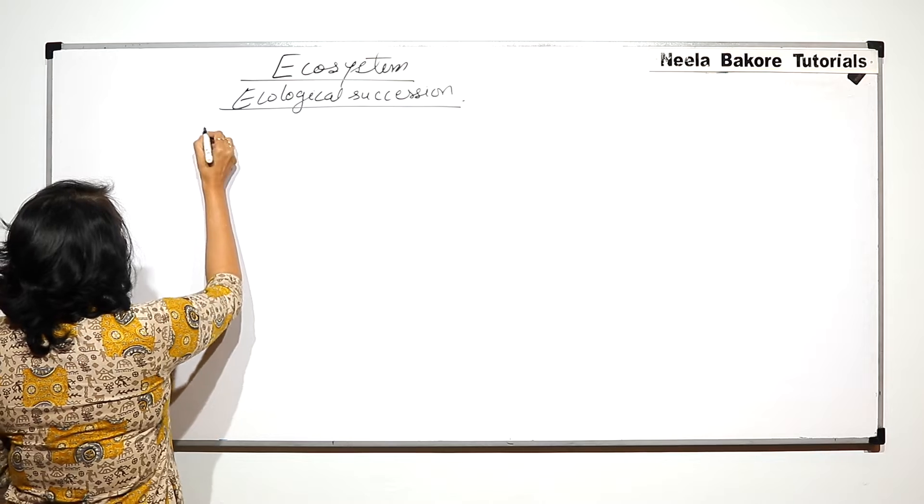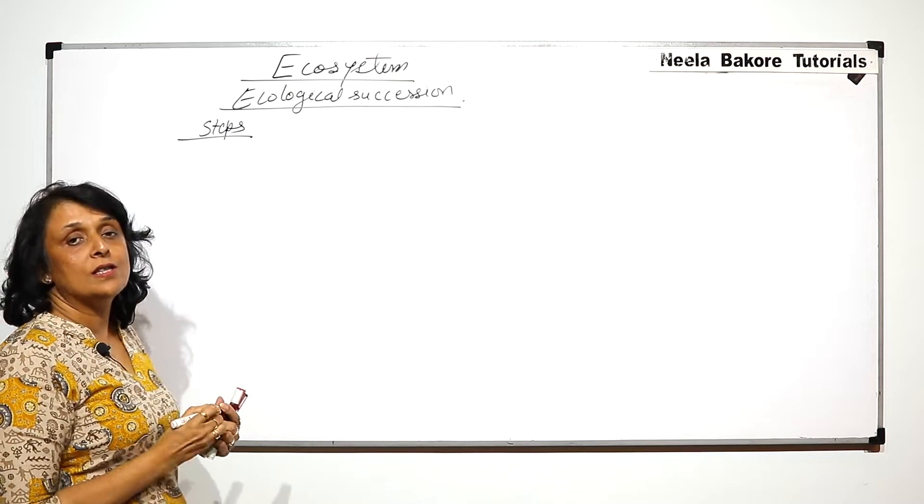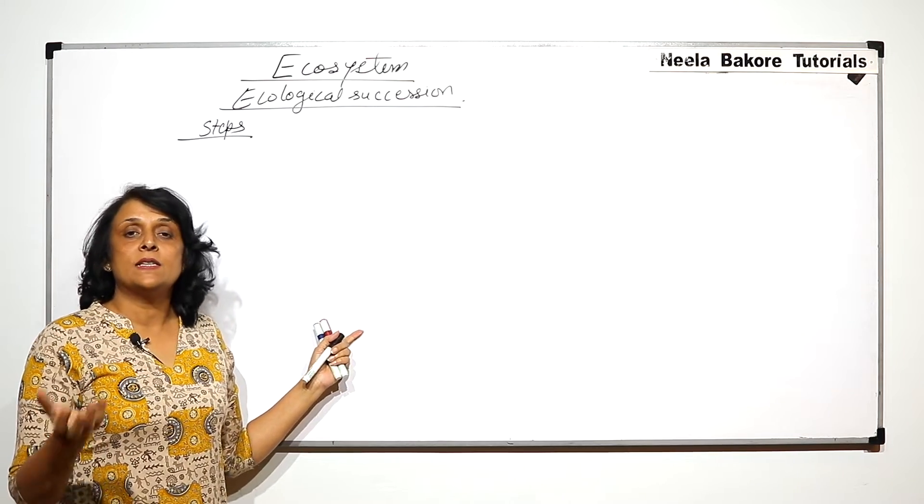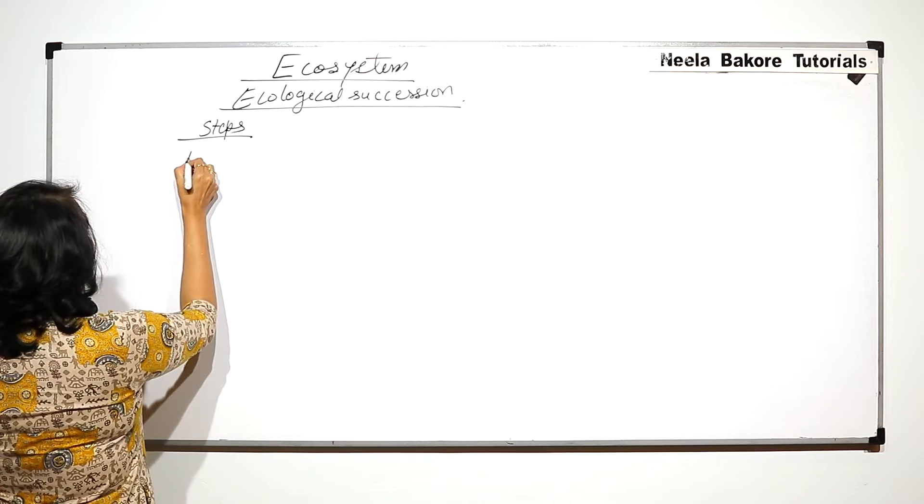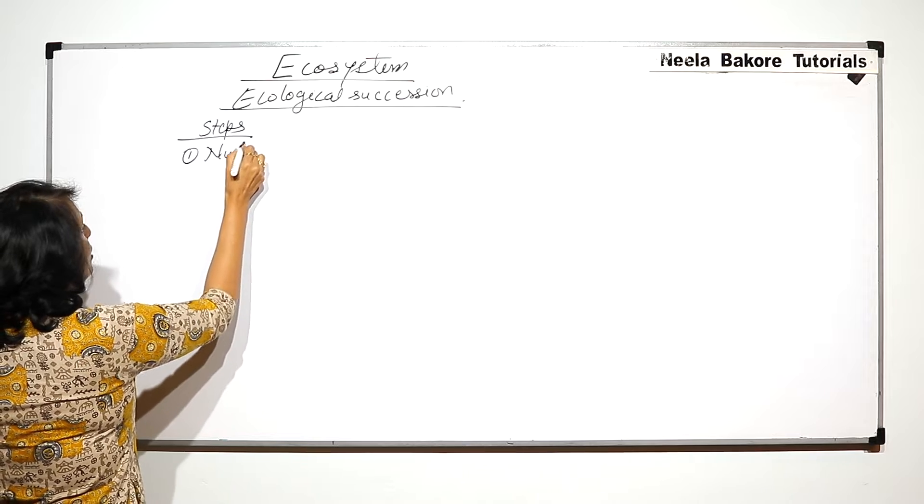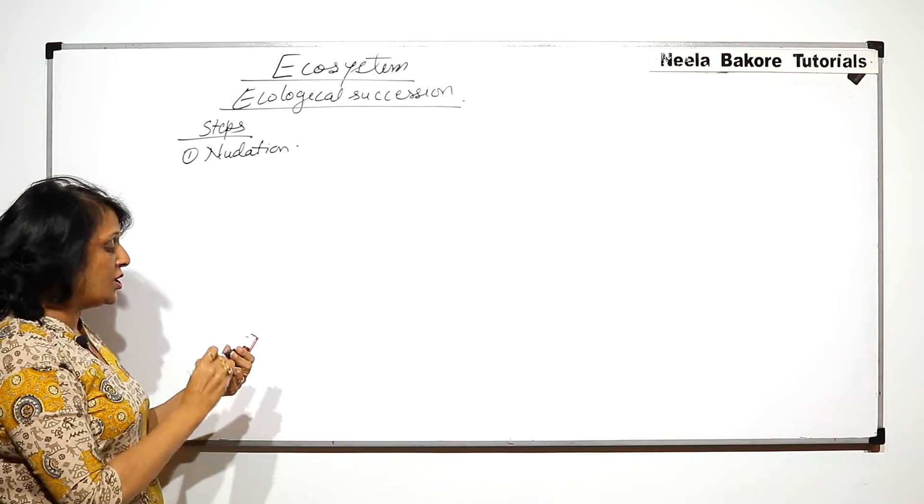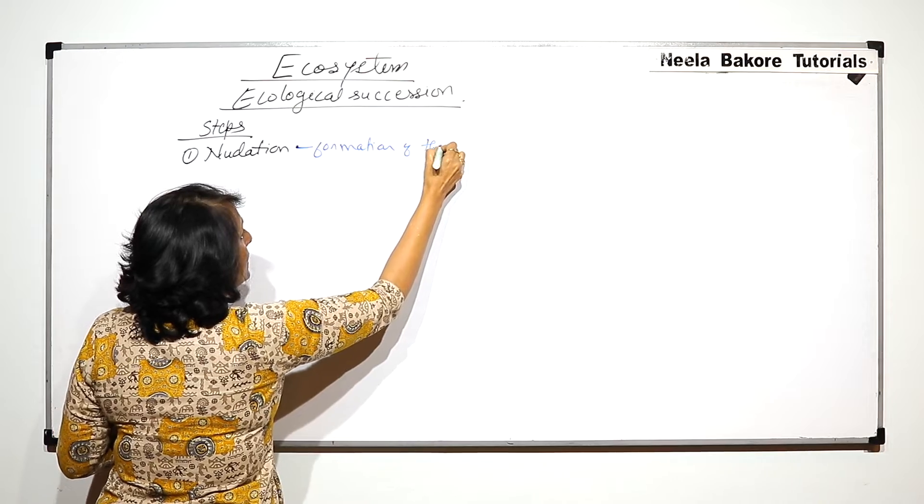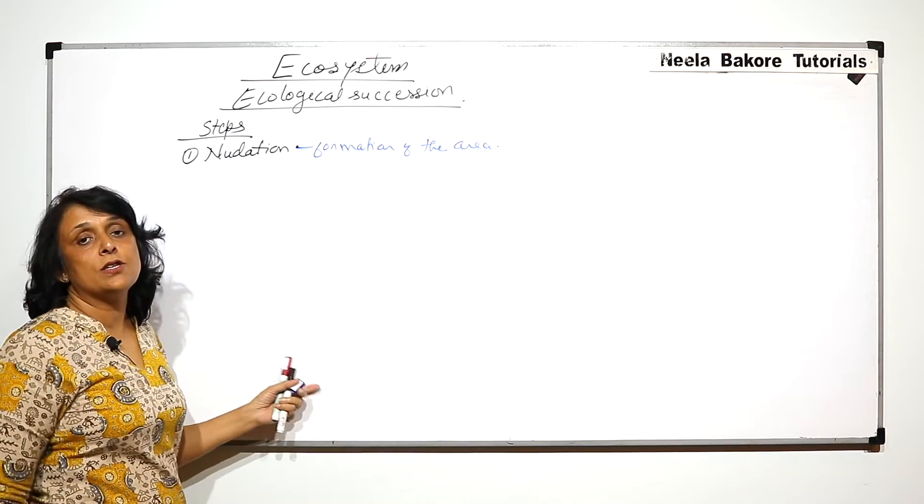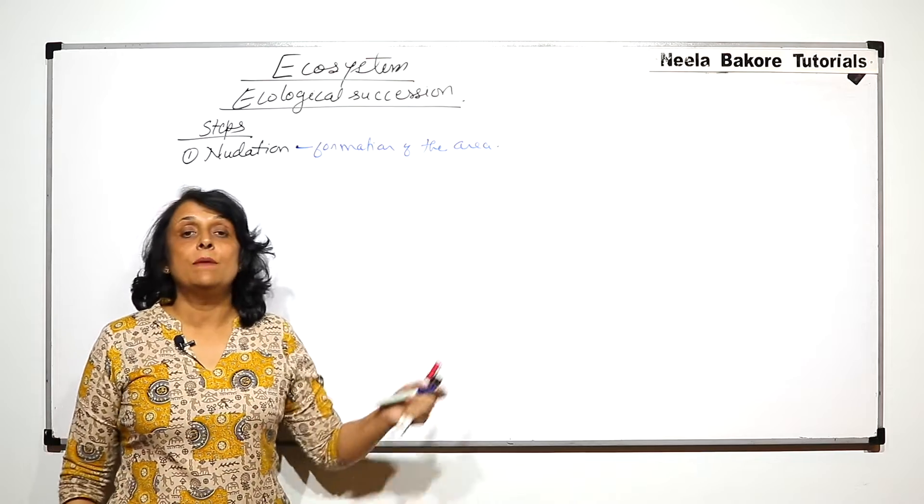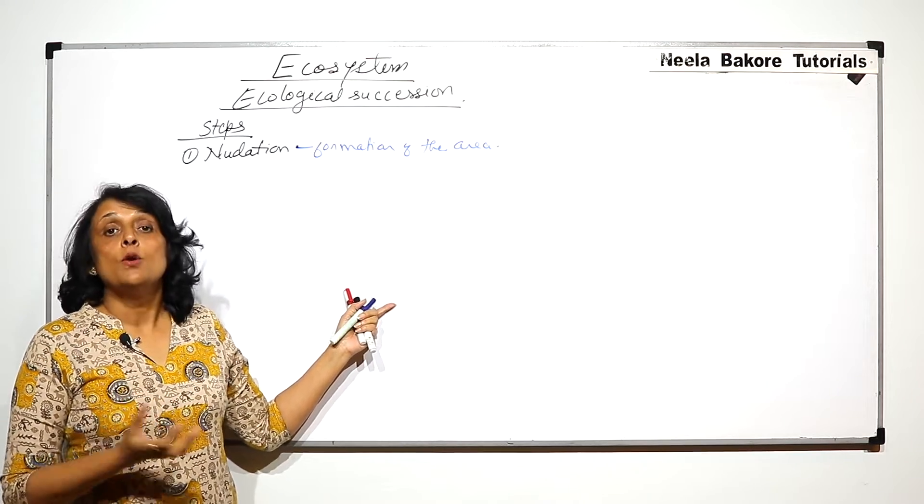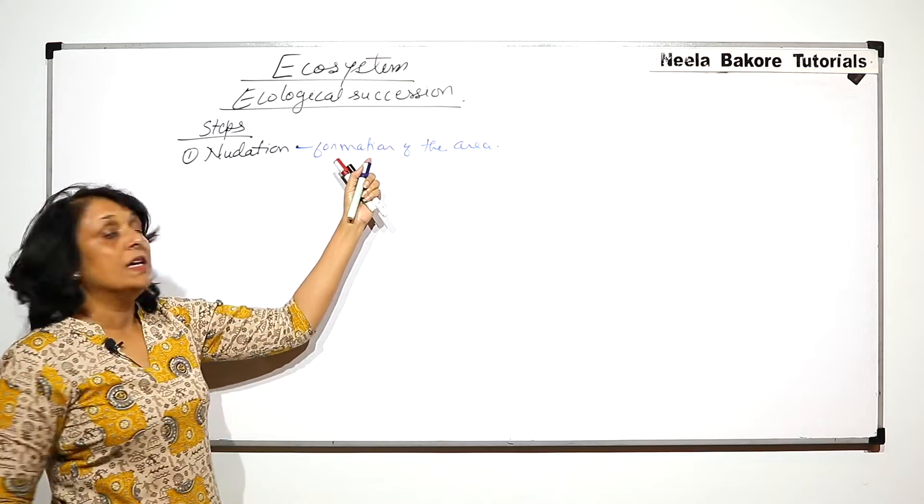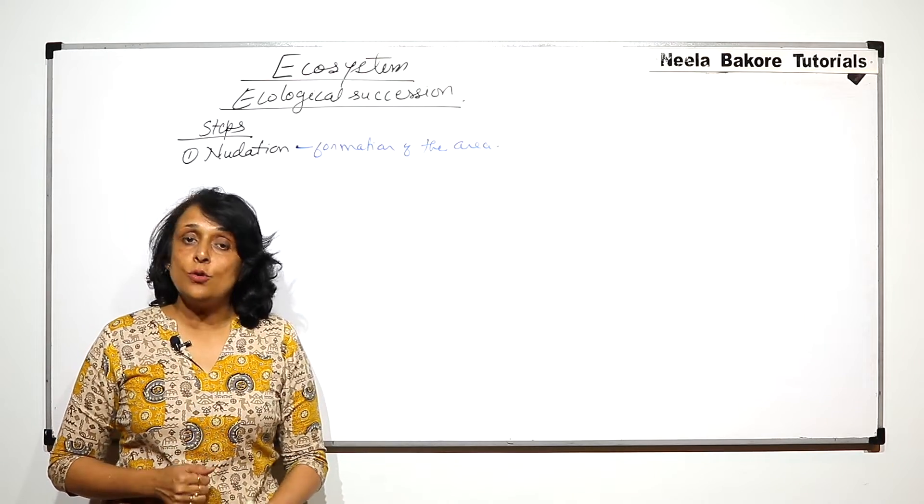Now here we will take up the steps of ecological succession irrespective of which place that is. The first step is called nudation. Nudation is formation of the area where the succession is going to take place. That area can be the lava which cools down or a forest which has been destroyed because of fire. Any area that is formed means now the area is available for the succession to start.